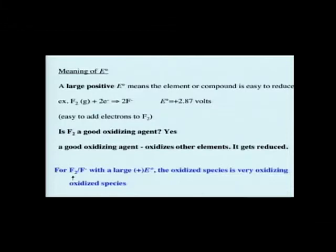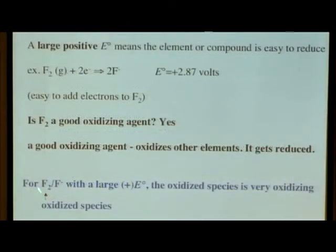So one way to remember this is: for a particular couple, if something has a large positive delta E naught, the oxidized species—so the oxidized species here is the F₂, it's of these two things, it's the one that's oxidized—the oxidized species is very oxidized.